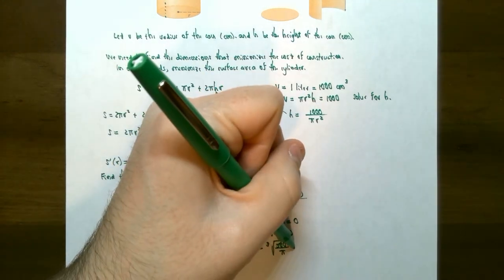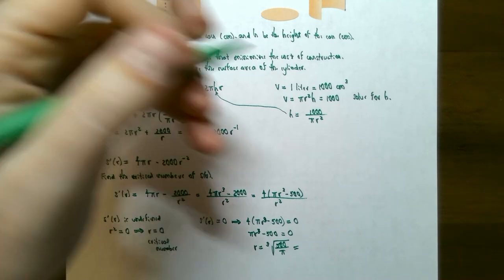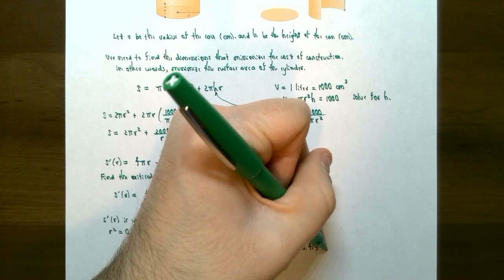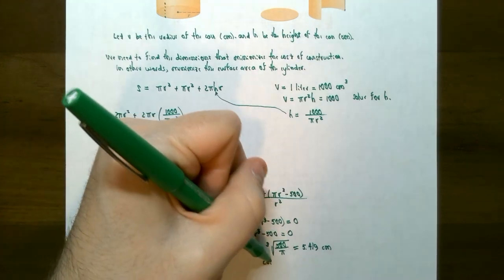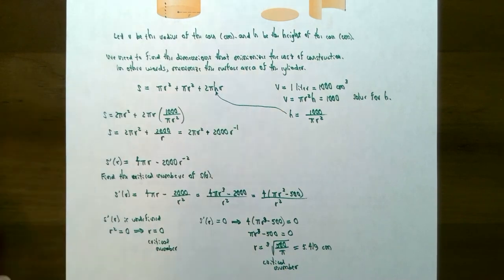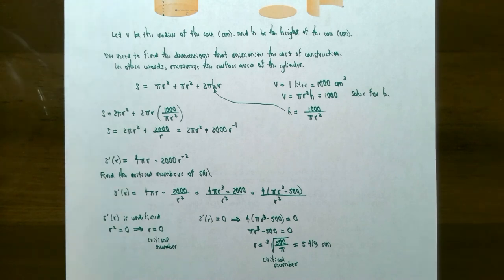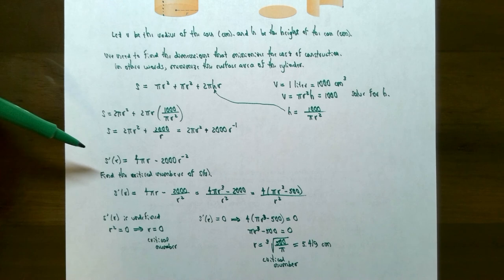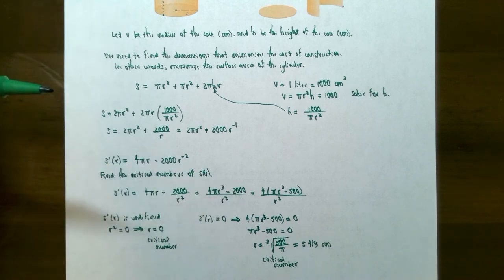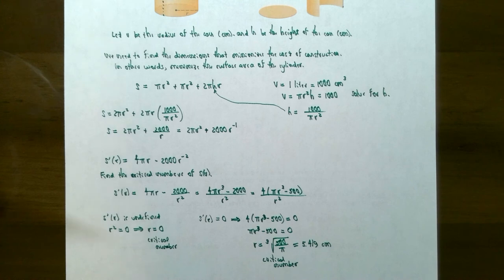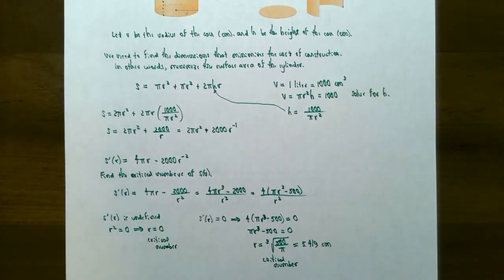So r ≈ 5.419 cm is the critical number. In the last two examples we used the second derivative test, but here computing the second derivative would require the quotient rule and significant simplification. So this time we'll use the first derivative test instead.